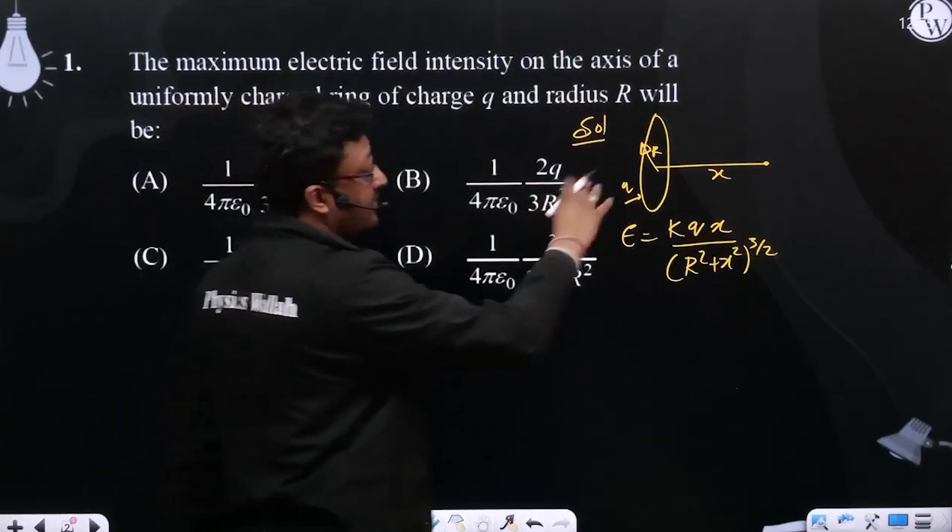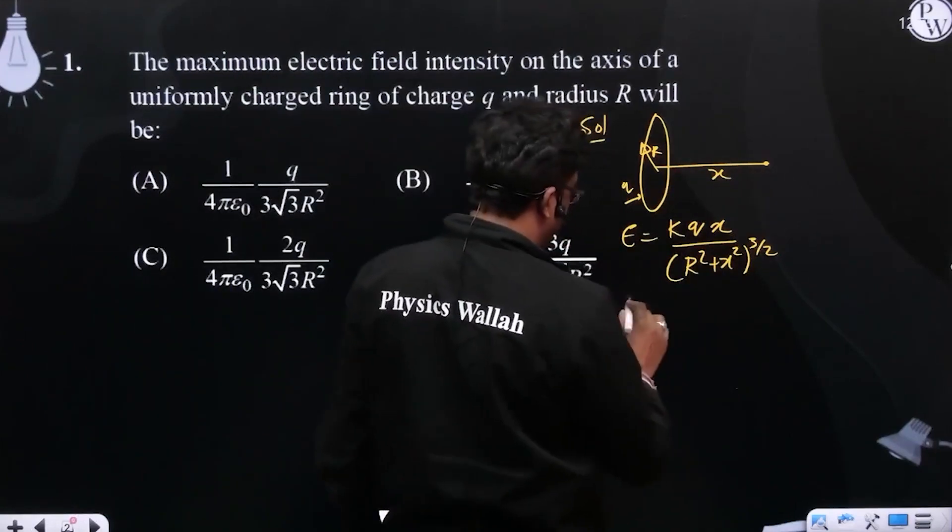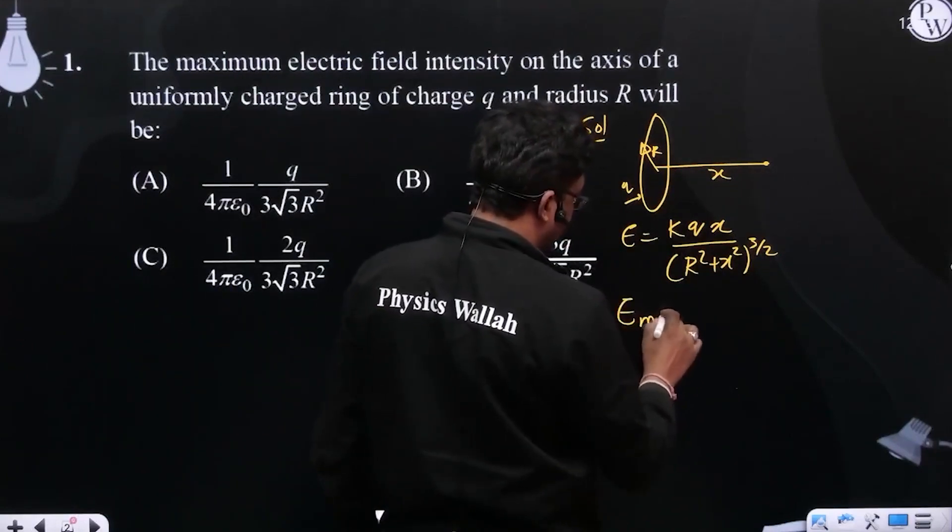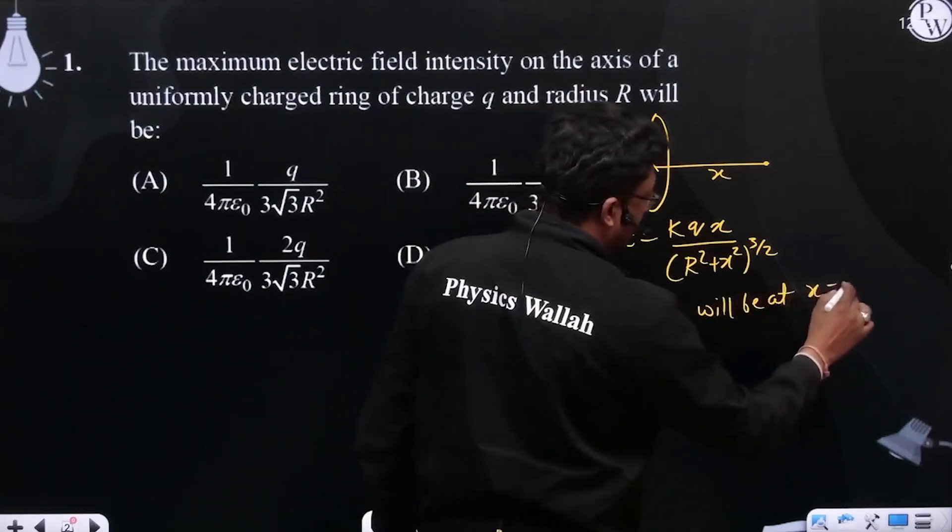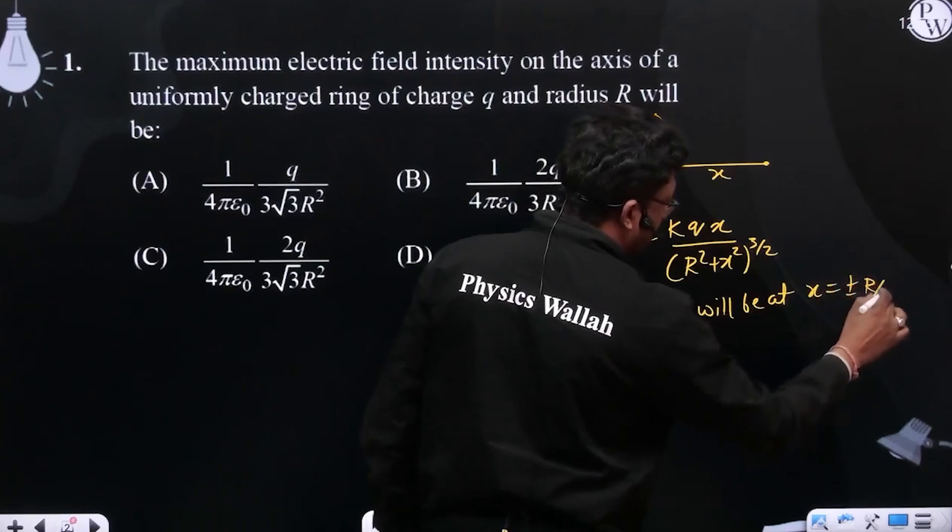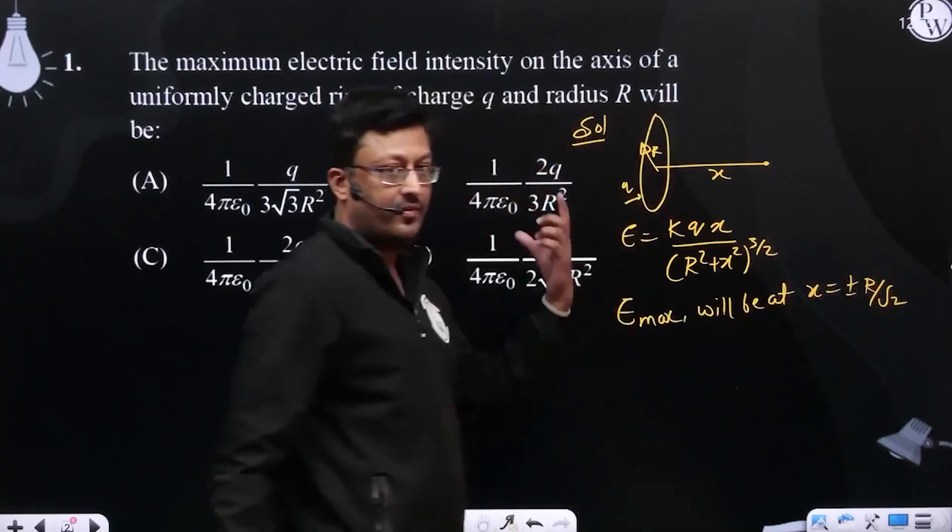When we put, the maximum electric field will be at x equals plus minus r by root 2. This we have done in the previous DPPs in the questions.